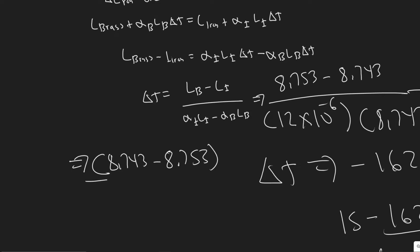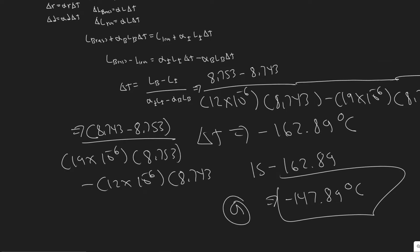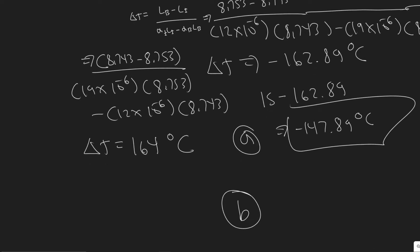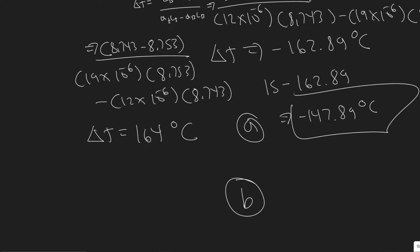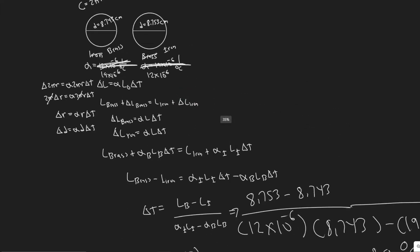With the swapped values, the denominator becomes 19 times 10 to the minus 6 times 8.753 minus 12 times 10 to the minus 6 times 8.743. When you calculate this, you get a delta T of about positive 164 degrees Celsius. So obviously it's going to have to increase this time. We're going from 15 and adding 164 degrees Celsius, giving 179 degrees Celsius. So 179 degrees Celsius is the new temperature they have to reach if we swap the materials.